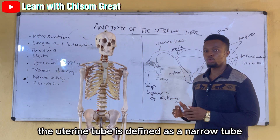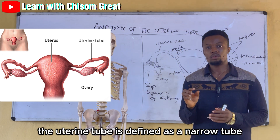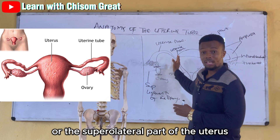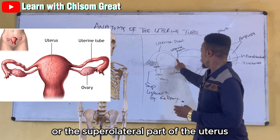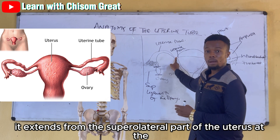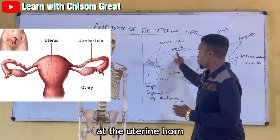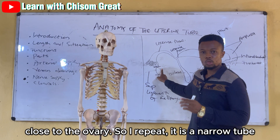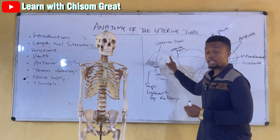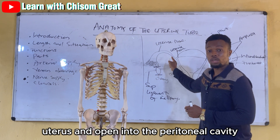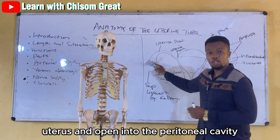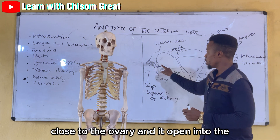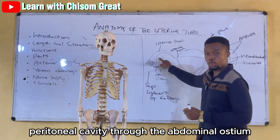The uterine tube is defined as a narrow tube that extends from the lateral or the superior lateral part of the uterus. It extends from the superior lateral part of the uterus at the uterine horn and opens into the peritoneal cavity close to the ovary. It opens into the peritoneal cavity through the abdominal ostia.